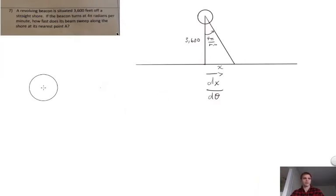So the question is, a revolving beacon is situated at 3,600 feet off of a straight shore. Okay, so here's our straight shore, here's our lighthouse, 3,600 feet away, this is the lighthouse, and it says that the rotation of the light is at 4 radians per minute.